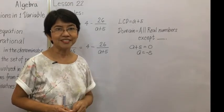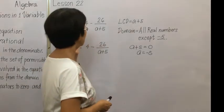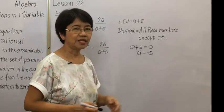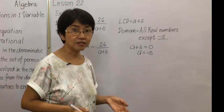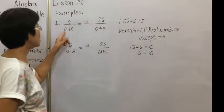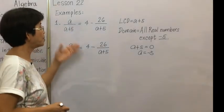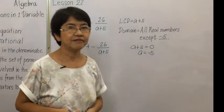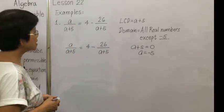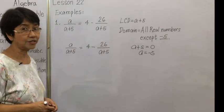Negative 5 is an exception. So the domain of our fractional equation is all real numbers except negative 5 — we can take any other real number as a possible solution. Why is this an exception? Because when we substitute negative 5, negative 5 plus 5 becomes zero, making our fraction undefined, and we cannot divide by zero. Next, we multiply both sides of the equation by the LCD to get rid of the fractions.